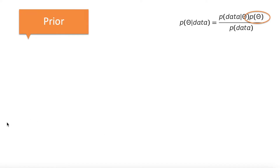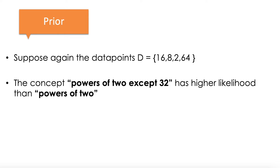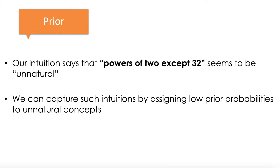What is the prior? Remember that the prior is this term in our Bayes formula for our posterior. We're going to explain this with an example. Imagine we have again these data points and two concepts: powers of two except 32, and powers of two. It turns out that powers of two except 32 has higher likelihood than powers of two. So what would you choose? Even though powers of two except 32 fits more into the data, it seems unnatural — not a smooth, natural model. That intuition can be captured by assigning a lower prior to those unnatural models.